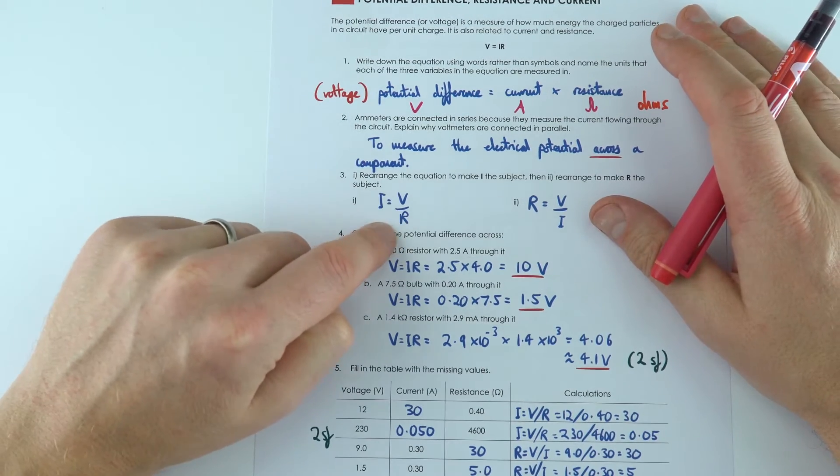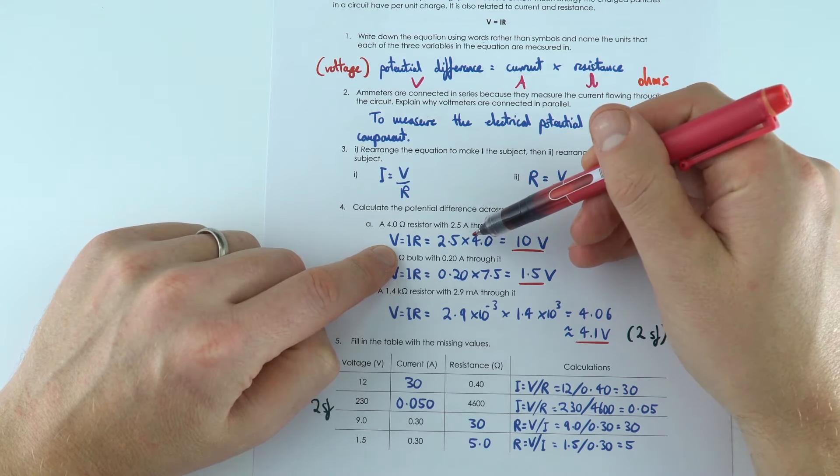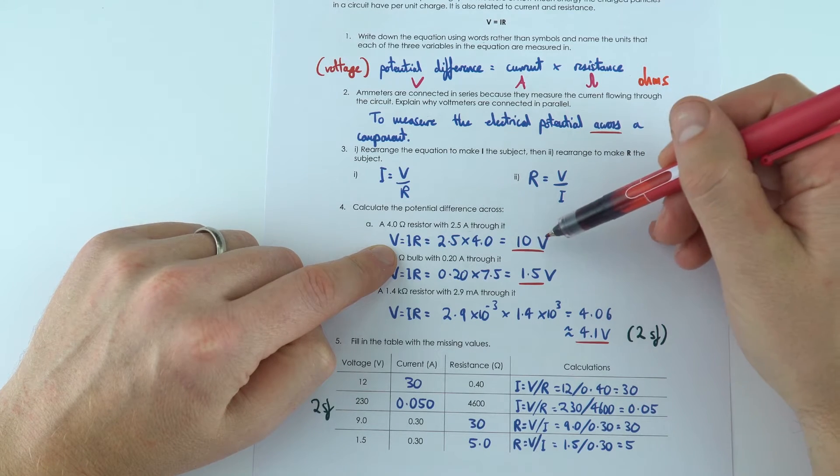We've then rearranged this equation into two other forms, and here we've just applied the equation, put in our numbers, and I've given the answer to two significant figures, so 10 volts, 1.5 volts.